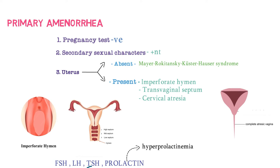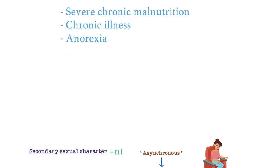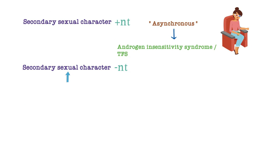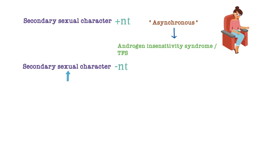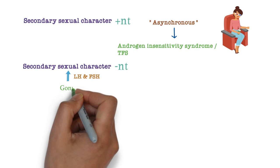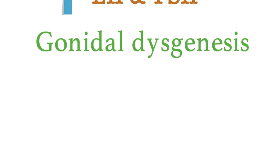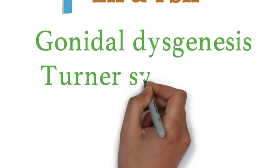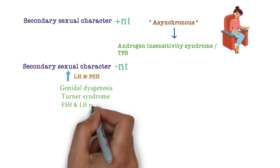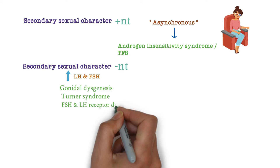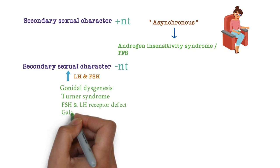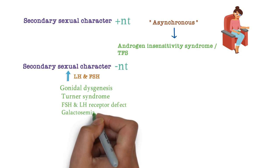If secondary sexual characters are absent, we check hormones again. If LH and FSH are increased, possible causes include gonadal dysgenesis or Turner syndrome. Other causes include FSH and LH receptor defects, and galactosemia.